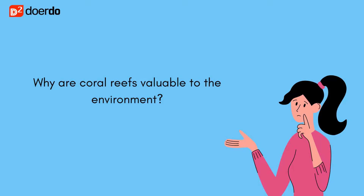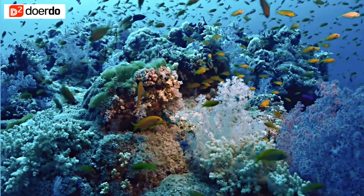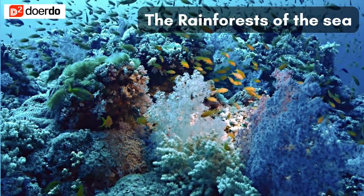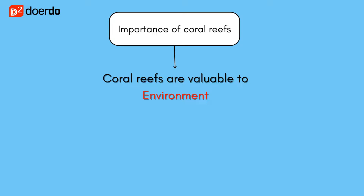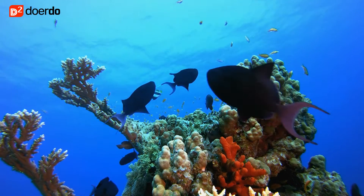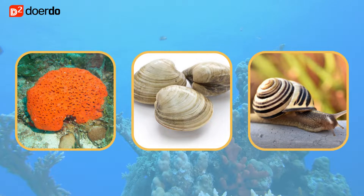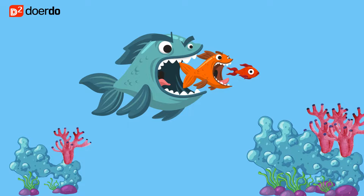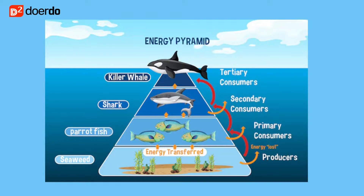Why are coral reefs valuable to the environment? Coral reefs are one of the most important ecosystems in the world and have been called the rainforests of the sea, owing to the diverse range of plants and animals that they support. They provide food and habitat for marine life that lives around the reefs. Coral polyps leave behind their skeletons as they grow or when they die. These skeletons create homes for sponges, clams, and snails. Those smaller organisms feed the bigger fish and even bigger fish. So without the corals, you slowly lose the ability to support the entire pyramid. Thus, they are essential to balance the marine food web.